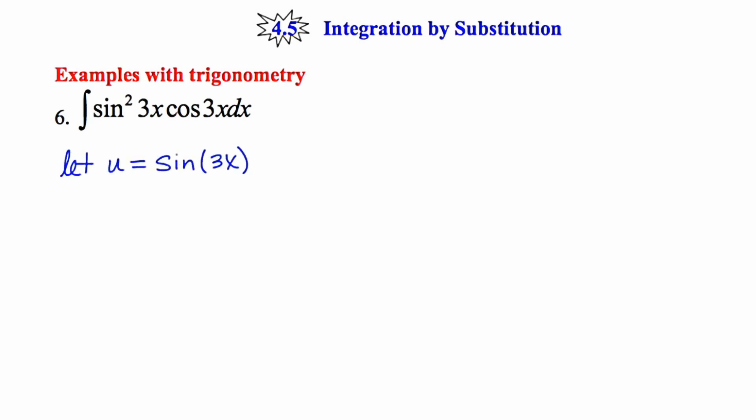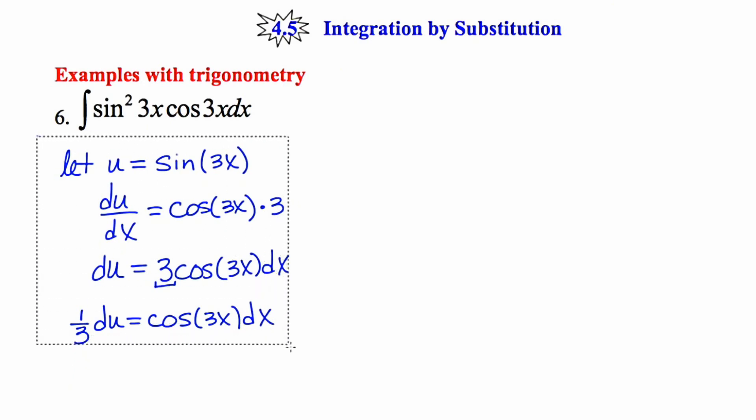The next step will be to take the derivative of each side with respect to x. This is going to require the chain rule. I'll now cross multiply. And I notice that my initial integrand doesn't have a random 3 floating around. So I want to divide out this 3 and rewrite this as 1/3 du equals cosine 3x dx. And now for organizational purposes, I'll put all of these results of my substitution in a box.